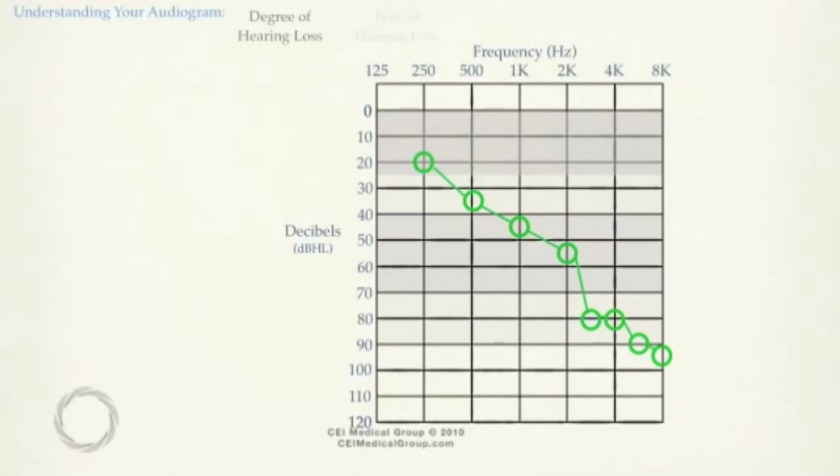So in this particular case, this person has normal hearing in the low frequencies, sloping to a profound loss in the high frequencies. This is how your audiologist will classify how much hearing loss you have, but let's look at it from a practical, everyday standpoint.